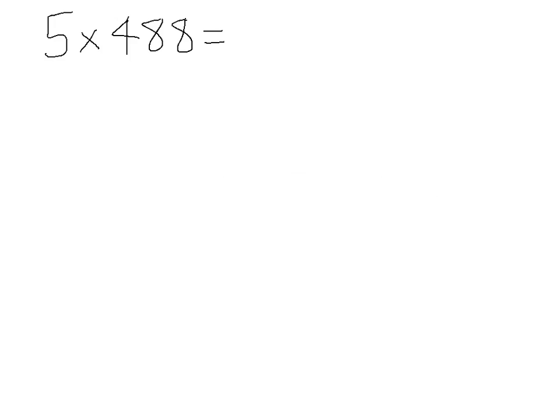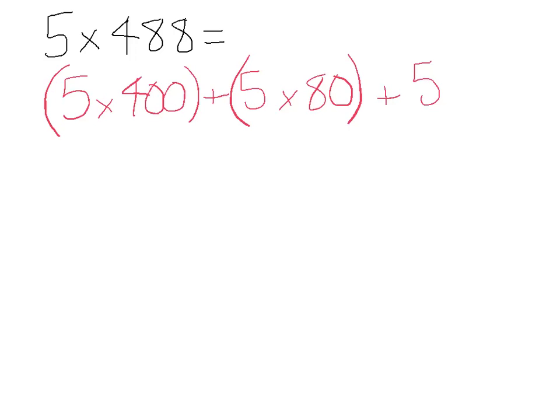Using this example 5 times 488, with the place value strategy we change it up to be 5 times 400 plus 5 times 80 plus 5 times 8.